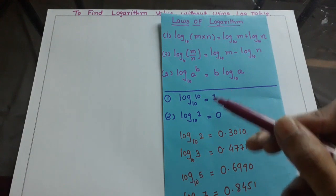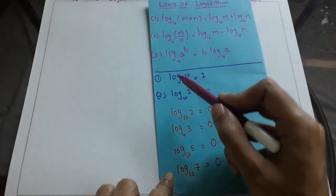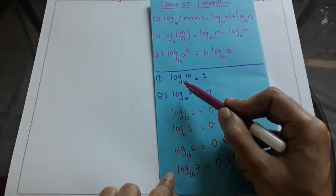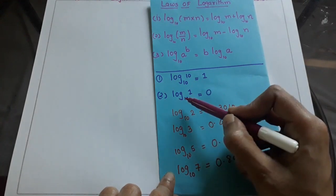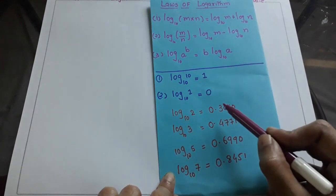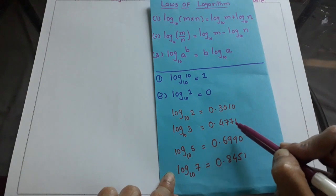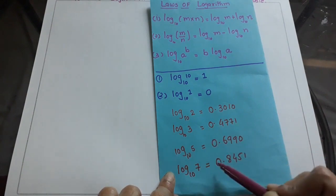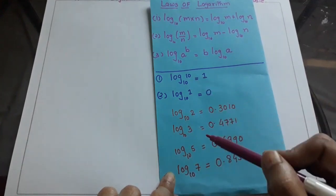We also need to learn some basic values of log. Log 10 = 1, or if the base and the power of log are the same, the value will be 1. Log 1 = 0. Log 2 = 0.3010. Log 3 = 0.4771. Log 5 = 0.6990. Log 7 = 0.8451. By knowing these values, we can find the log of any number.